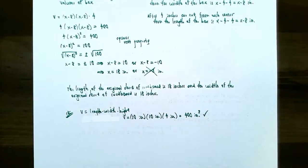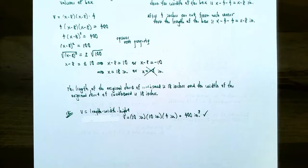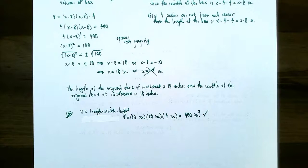This finishes our discussion on solving quadratic equations in terms of applications. We had one problem using the Pythagorean Theorem to set up the equation, and then two problems using geometric formulas — area for one and volume for the other — and we used the square root property in each of these three equations to solve for x. If you have any questions about setting up the equations or the homework for this section, please let me know. I'll see you at the next video when we solve linear inequalities.